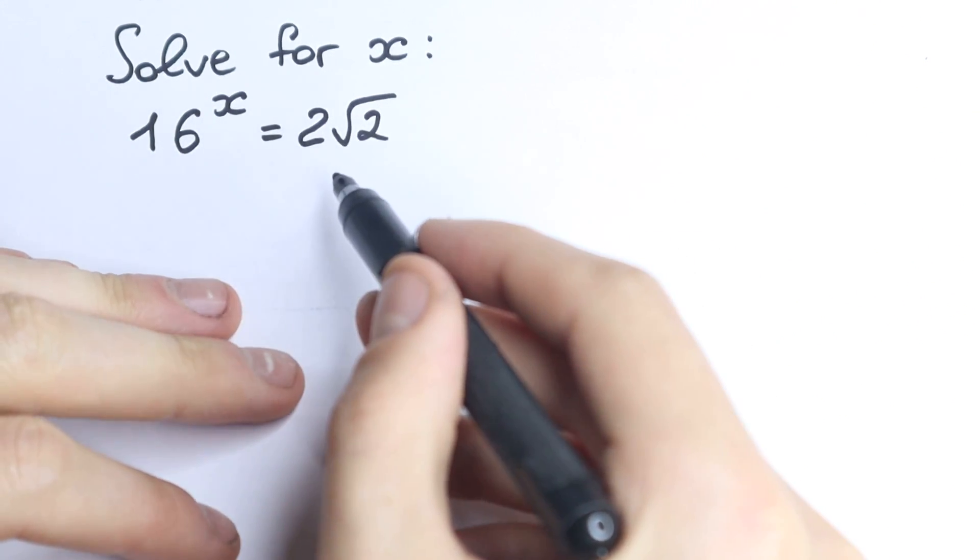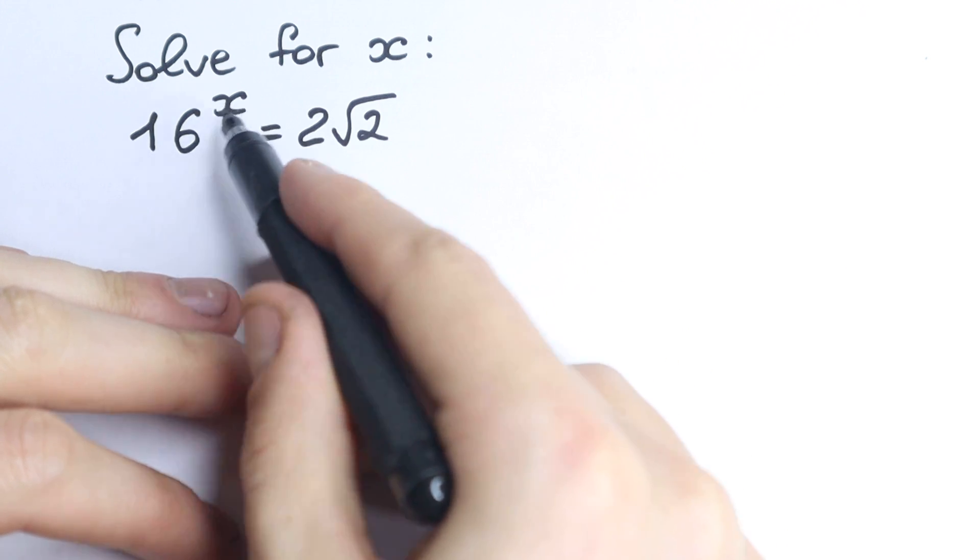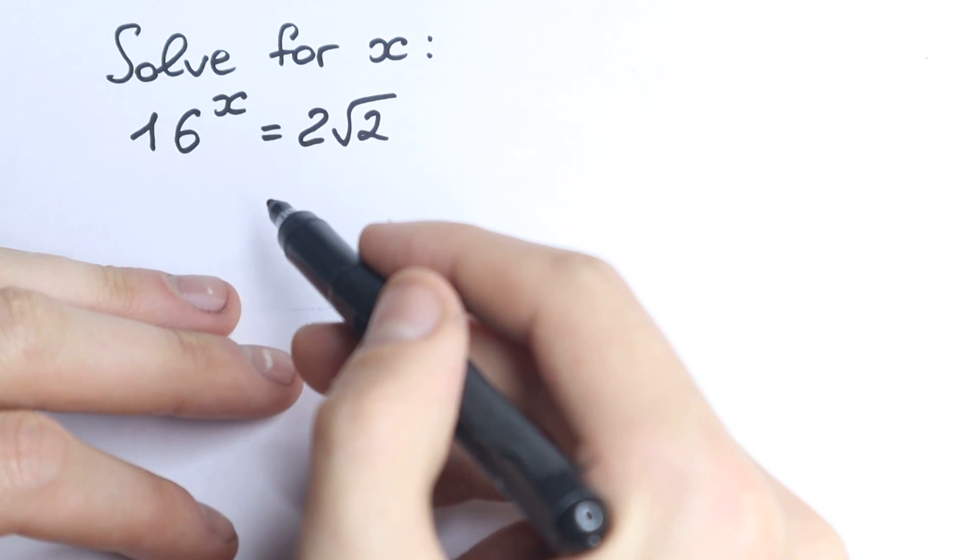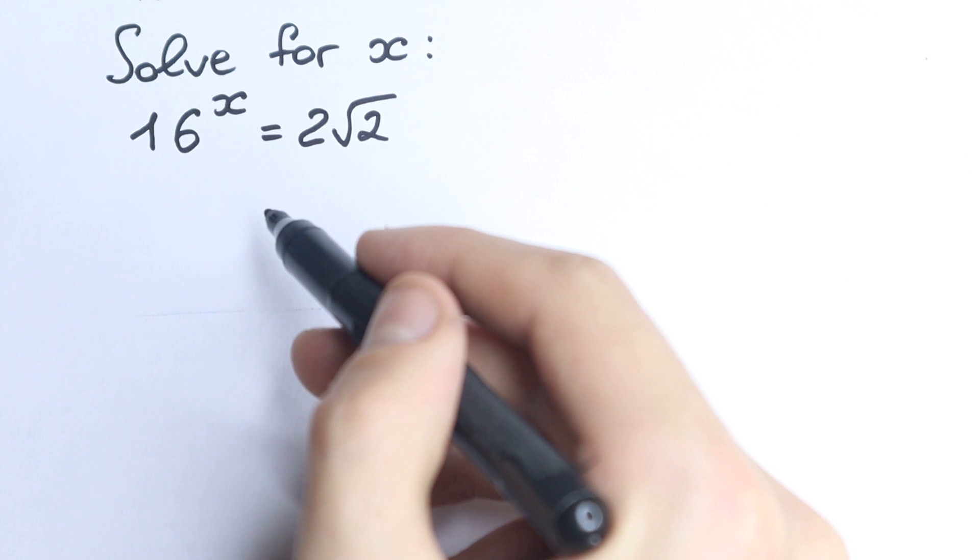16 to the x equal to 2 square root of 2. What is our x? Right here we need to find this x, and what do you think, how can we solve this question? Write your suggestion in the comment, pause the video and write your suggestion in the comment section.